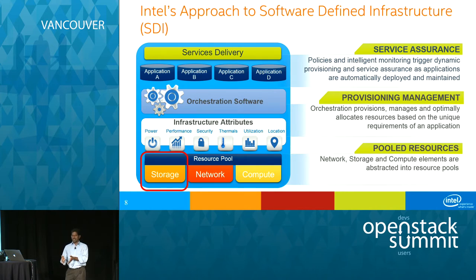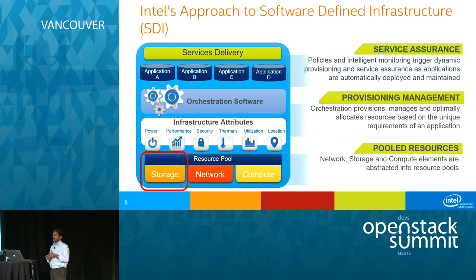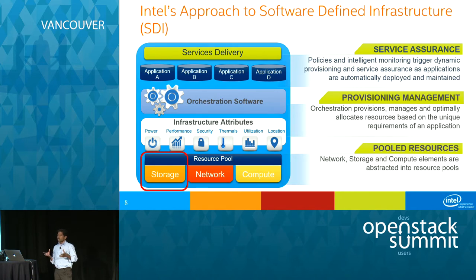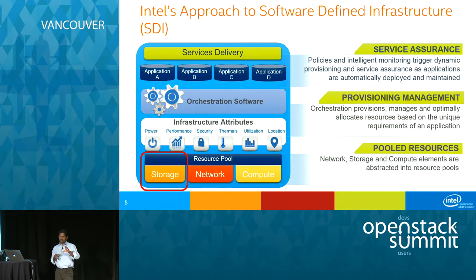We need to look at this from the data center perspective using what we call a software-defined infrastructure. It has compute, storage, and network elements. At the bottom you have resource pools exposing a wide variety of infrastructure attributes — power, thermal, security, performance, latency. You feed those attributes to orchestration software that intelligently maps infrastructure resources to meet application requirements. That's the fundamental SDI framework.